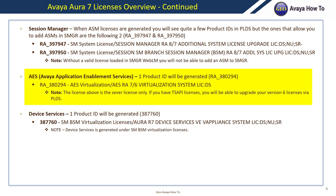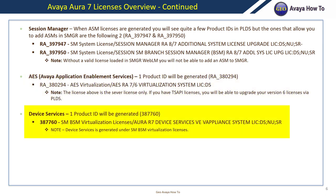For the AES server, AES will require one license, RA380294, to allow you to install your server in a virtualized environment. Please note your TSAPI or DMCC licenses will need to be upgraded via PLDS, so make sure you have access to PLDS or have your business partner handle this part.